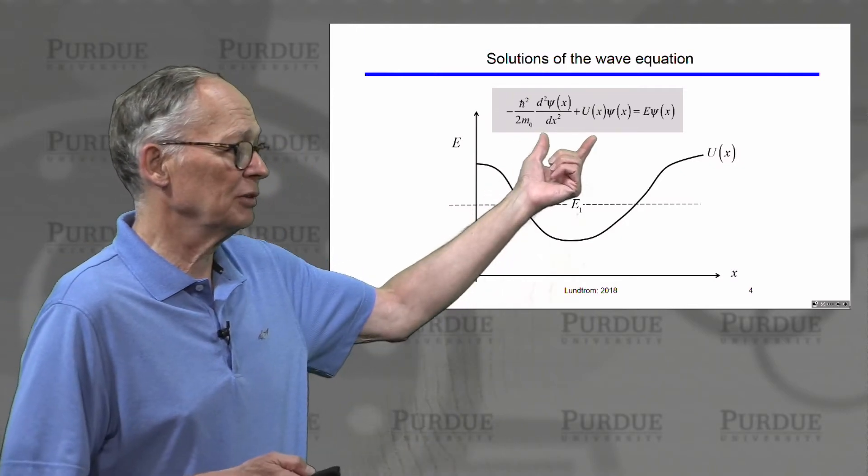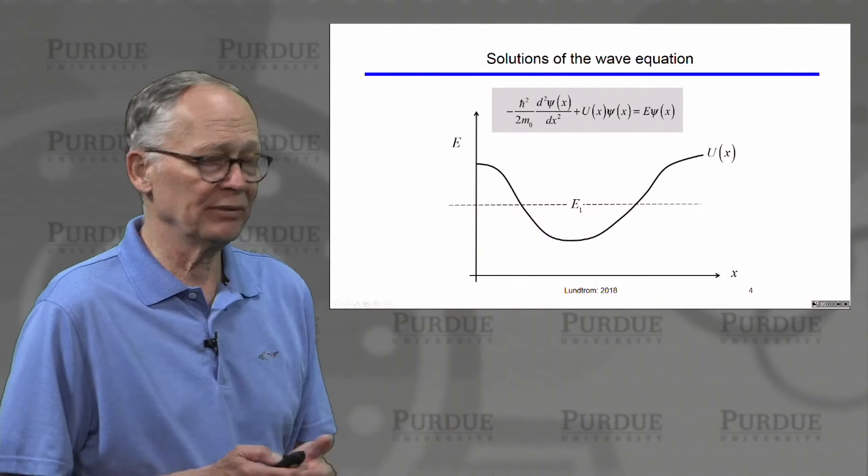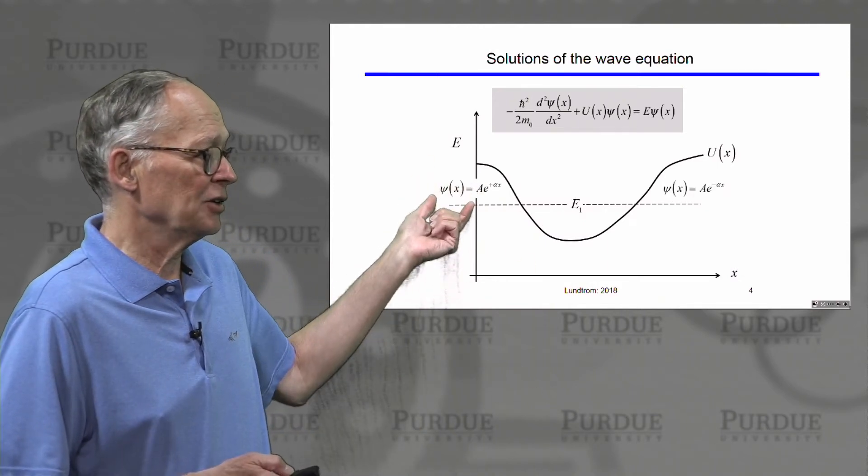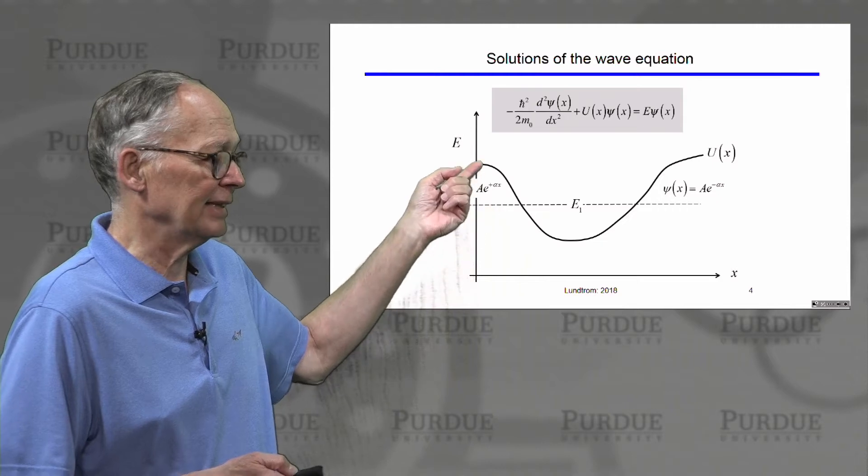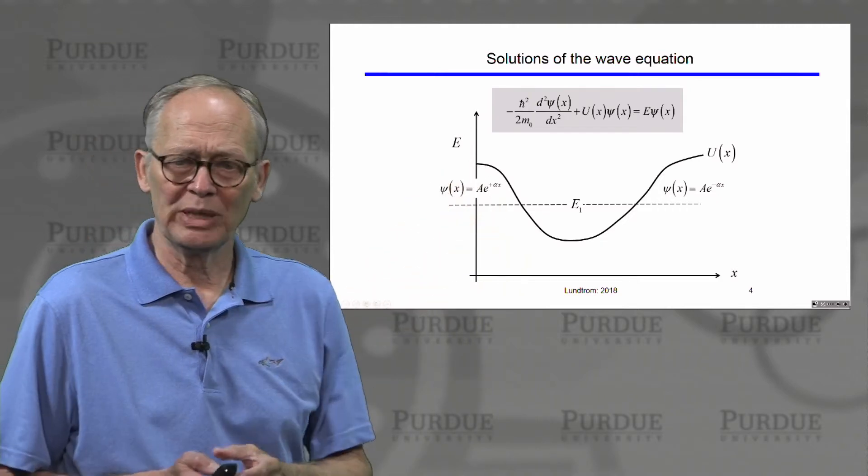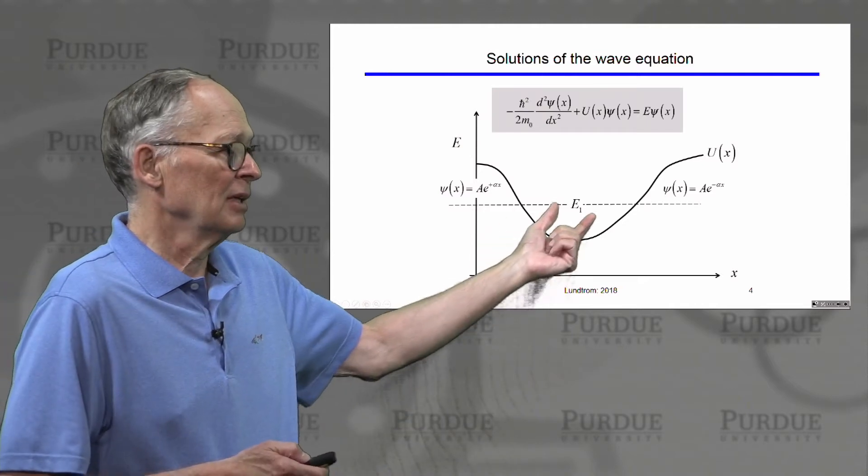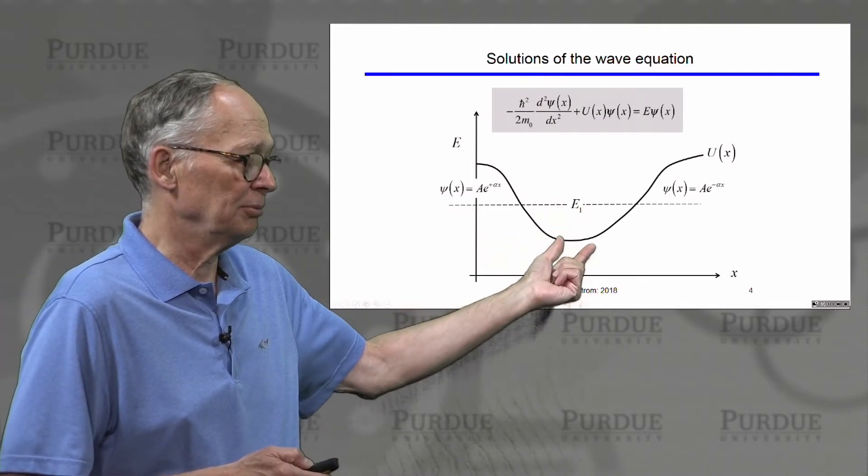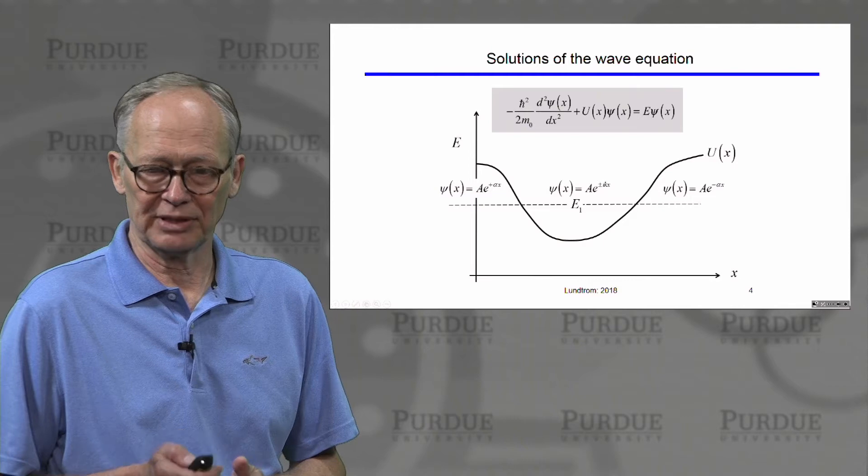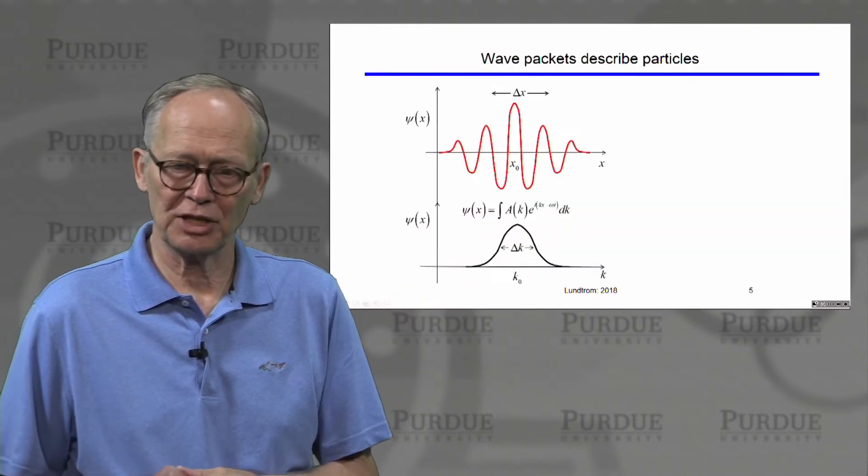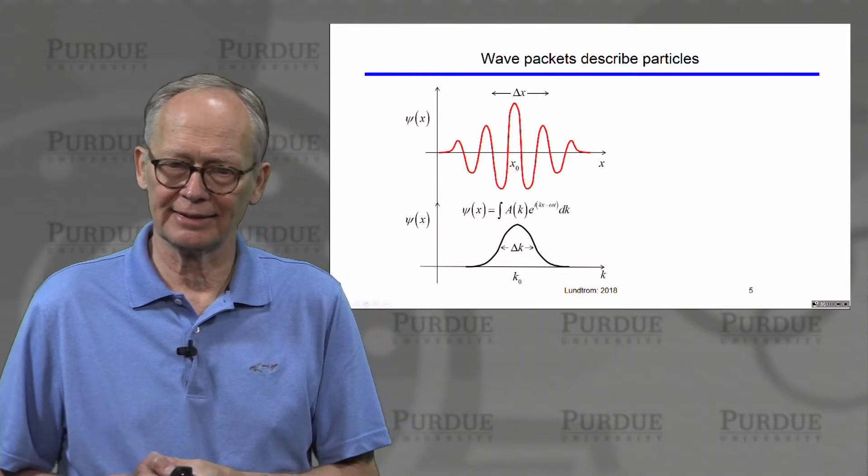We talked about the solution to the time-independent part of the wave equation under different conditions. When the energy of the electron is less than the potential energy, we get exponentially growing or decaying solutions. When the energy of the particle is above the potential energy, we get wave solutions. So the general natures of the solutions are easy to see.